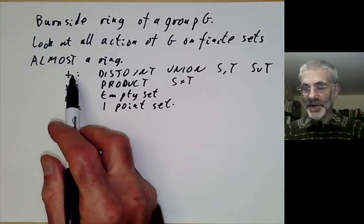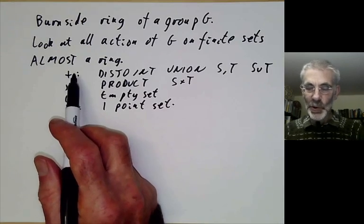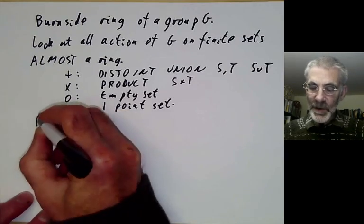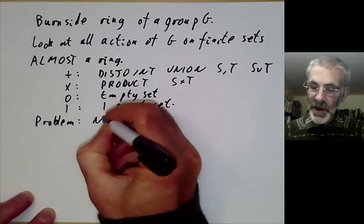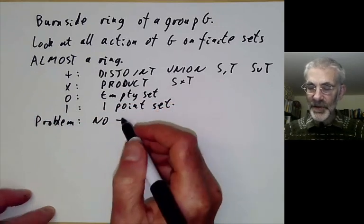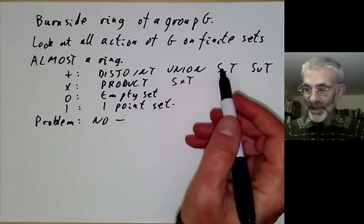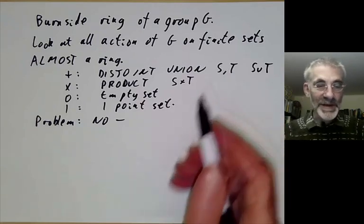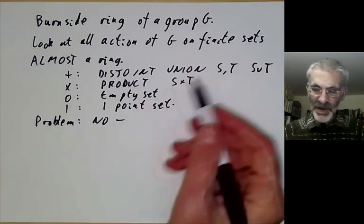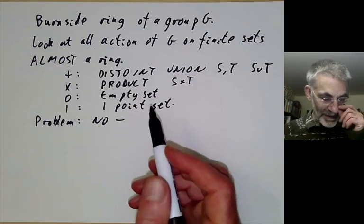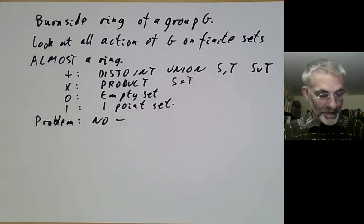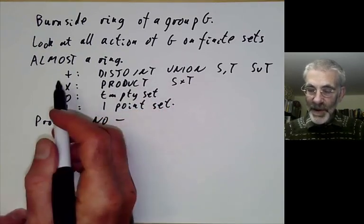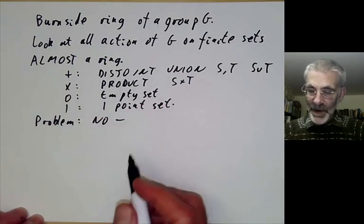It's not too difficult to check that this satisfies almost all the axioms of a ring - it's associative and distributive. There's one problem: there's no subtraction in general. If you've got two finite sets, there's no natural way to subtract one from the other. Let's not worry about that for the moment and just take a look at what this ring actually looks like.